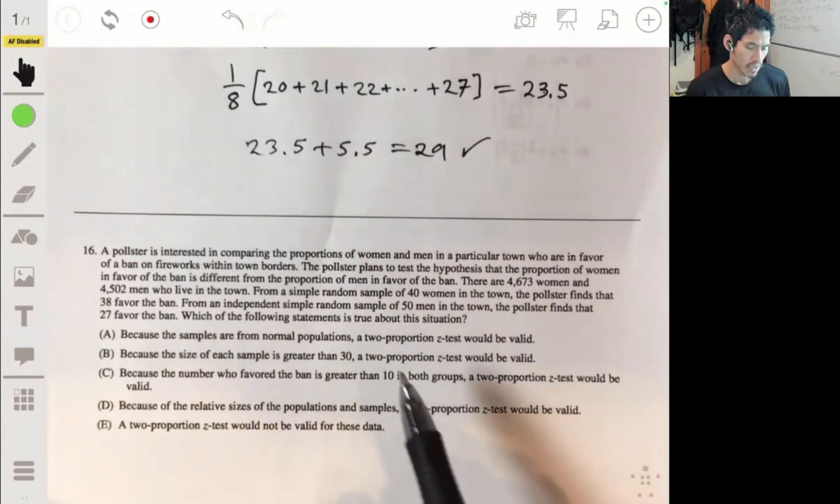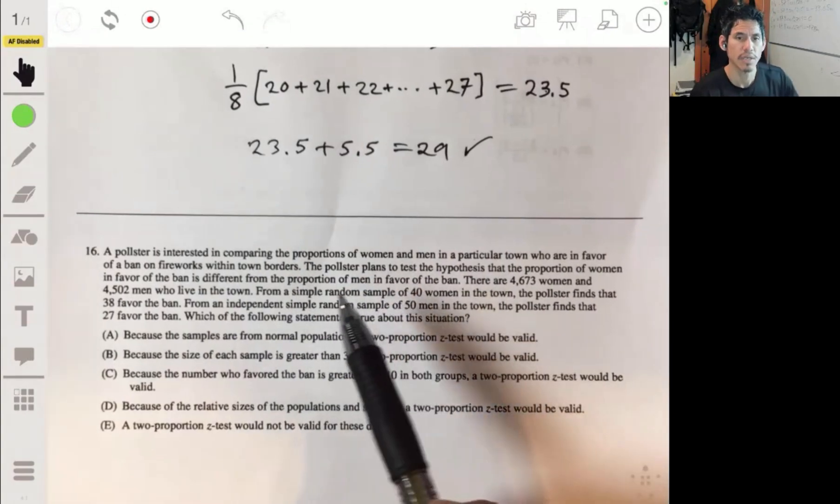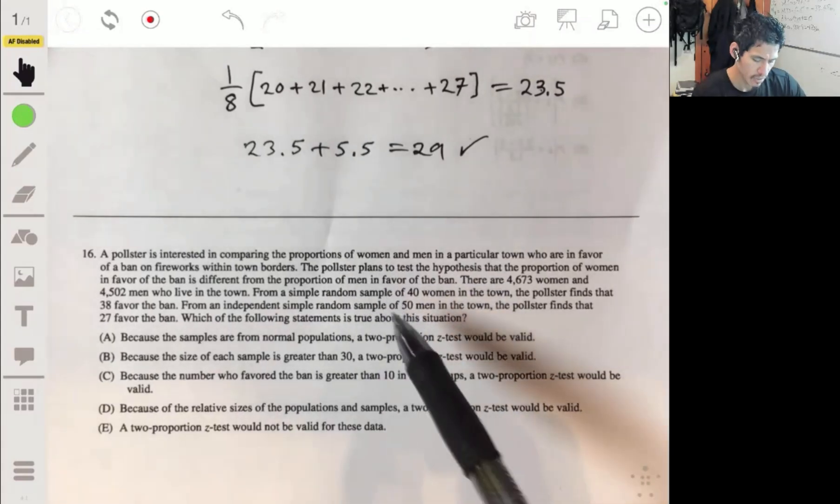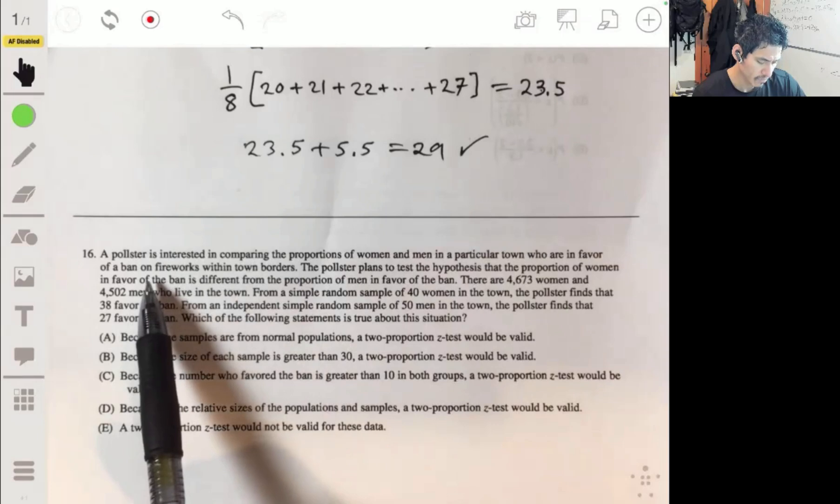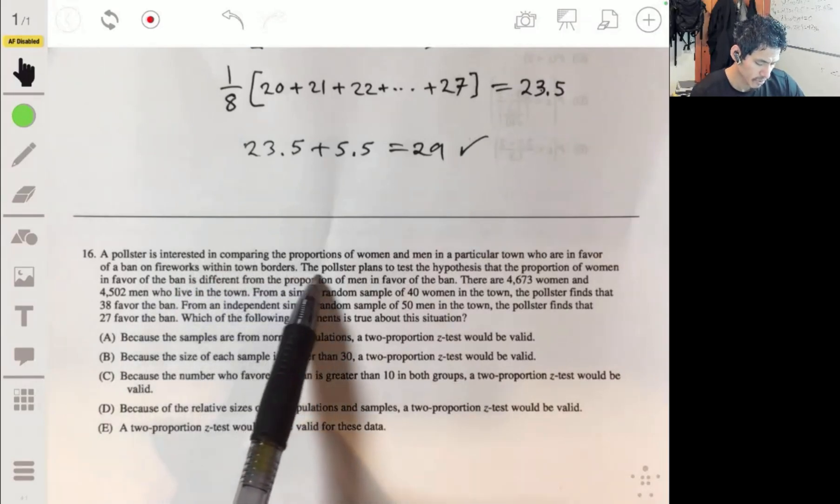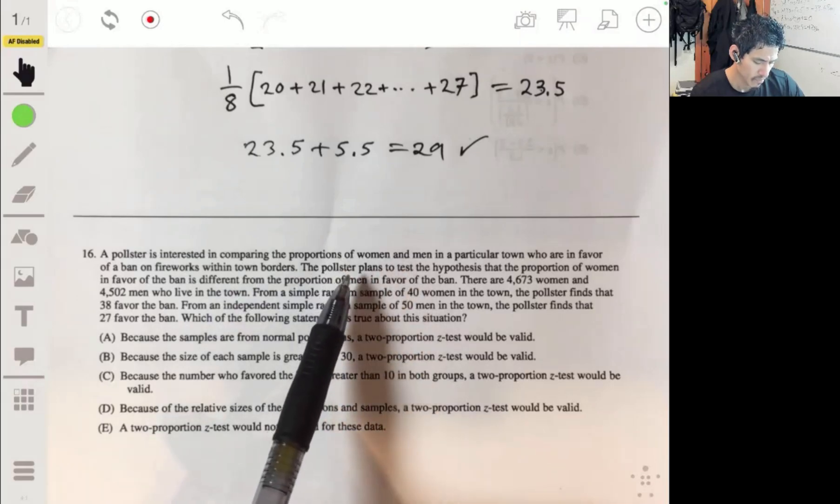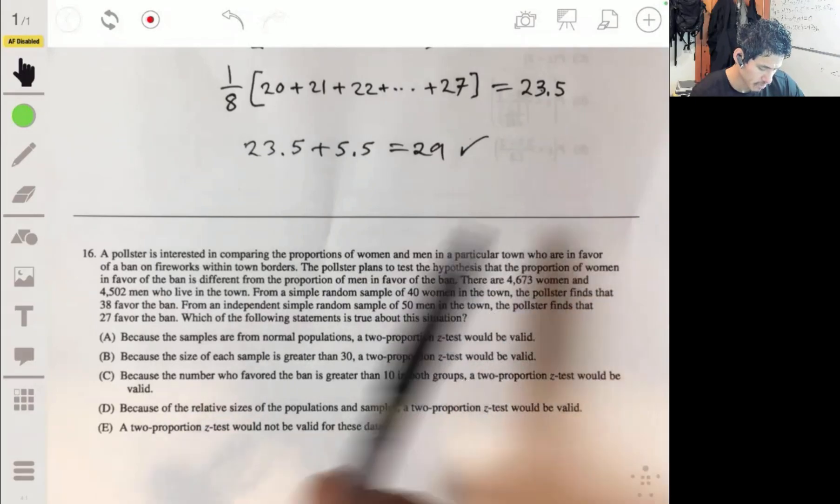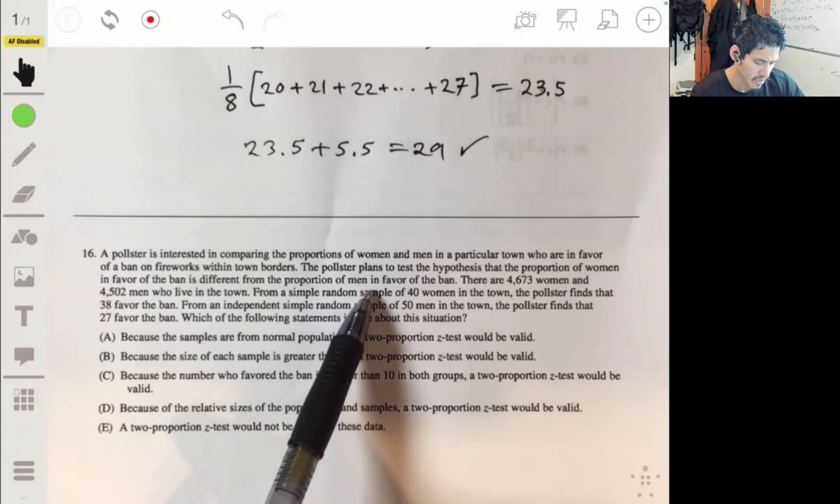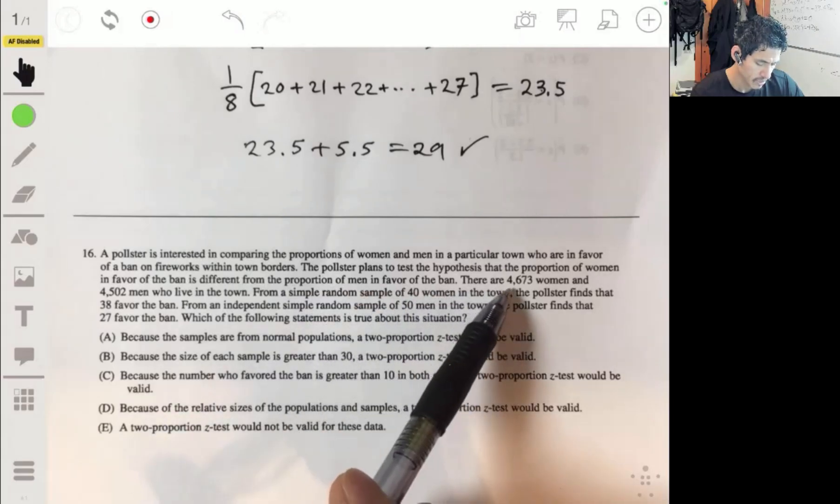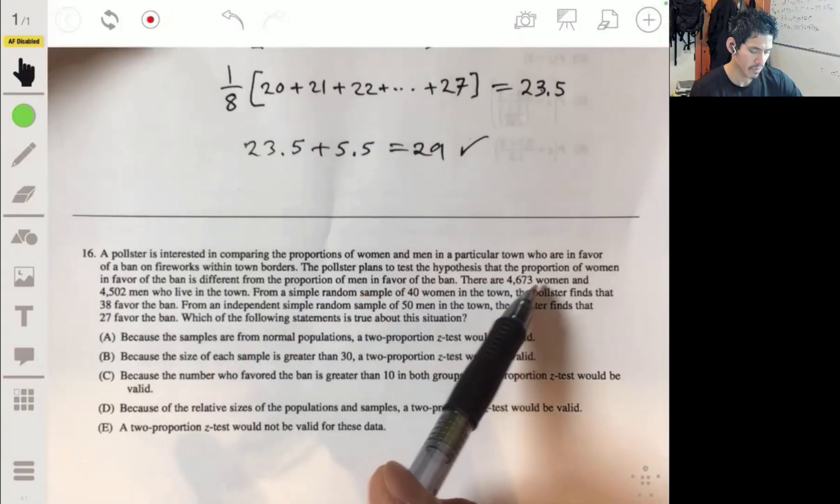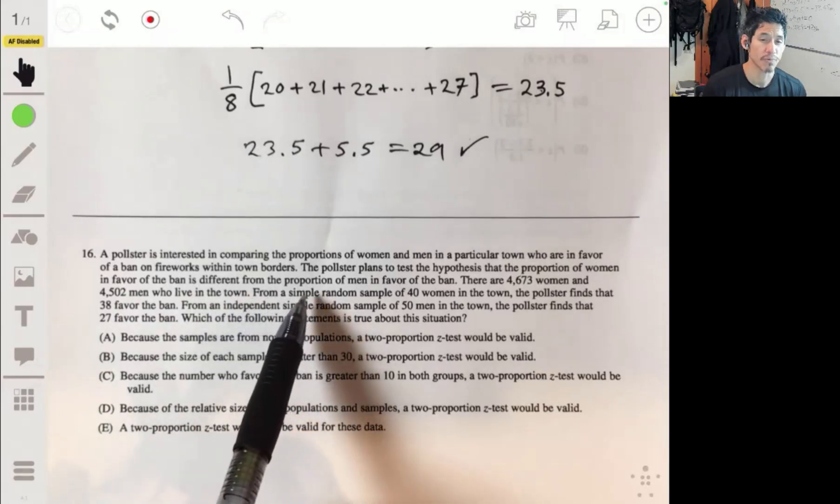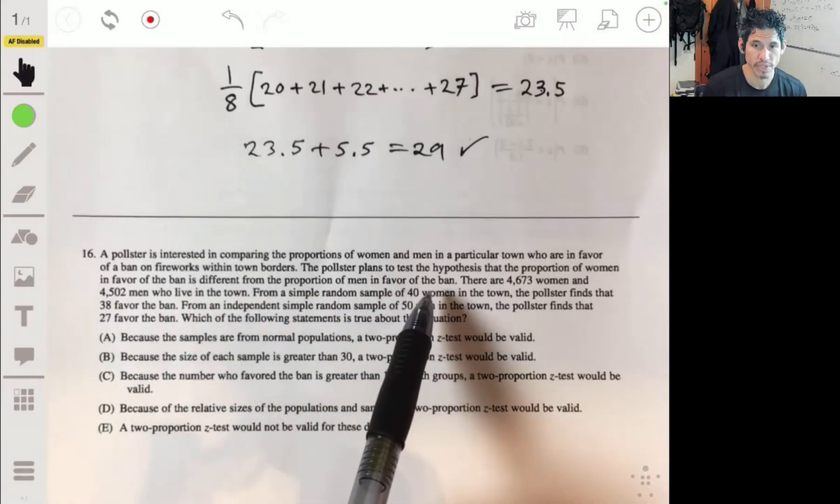Problem 16. The pollster is interested in comparing the proportions of women and men in a particular town who are in favor of a ban on fireworks in town borders. The pollster plans to test the hypothesis that the proportion of women in favor of the ban is different from the proportion of men in favor of the ban. There are 4,673 women and 4,502 men who live in the town.